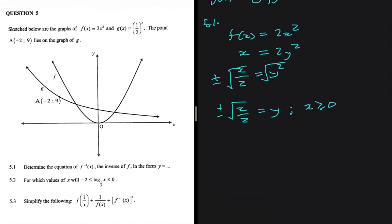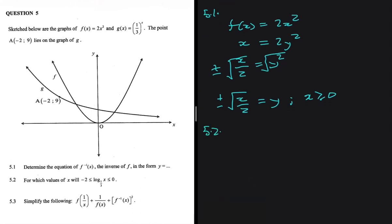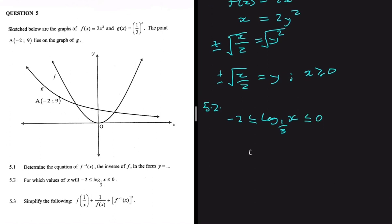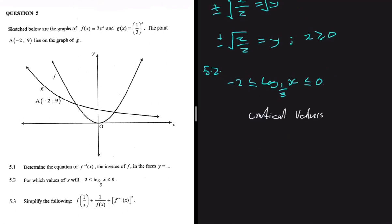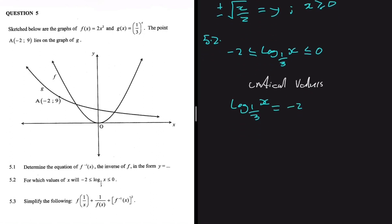Moving to 5.2, which asks: for which values of x will minus 2 be less than or equal to log base (1/3) of x, and that still be less than zero? Let's find our critical values. We set log base (1/3) of x equals minus 2, so x equals (1/3) to the power of minus 2.